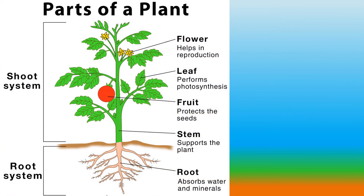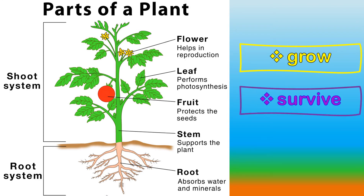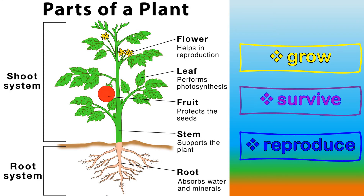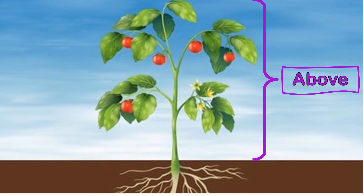The different parts of a plant help it grow, survive, and reproduce. There are parts of a plant that are above the ground, and there are parts of a plant that are below the ground.